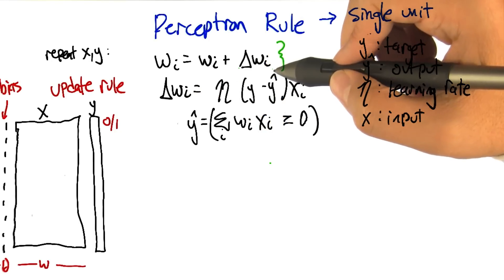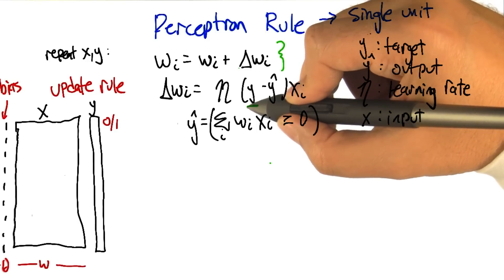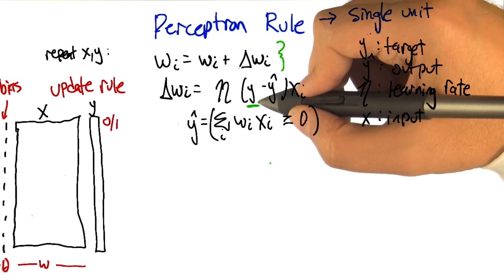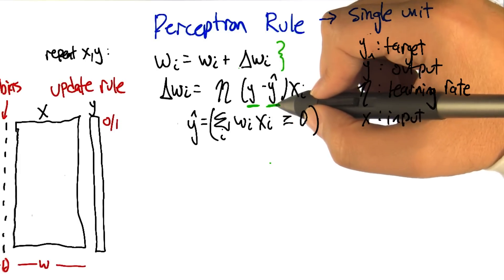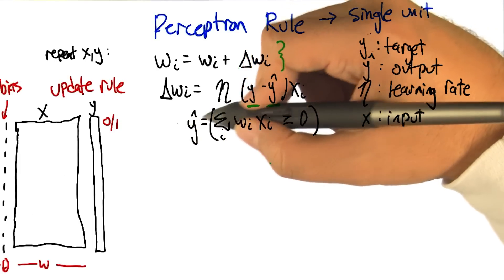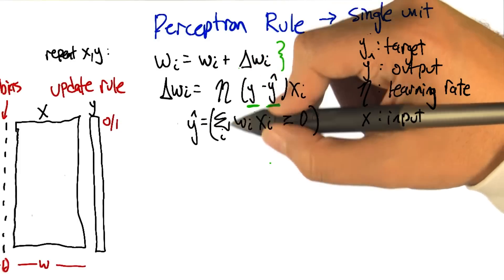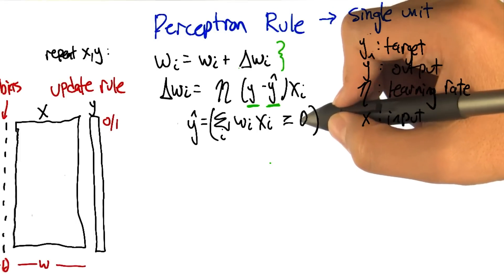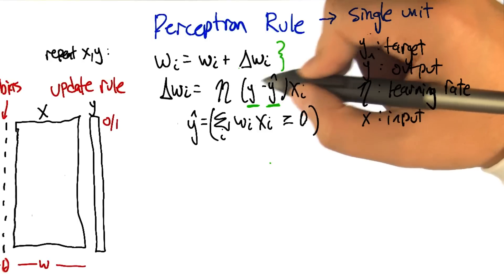The weight change is going to be defined as follows. We're going to take the target, the thing that we want the output to be, and compare it to what the network with the current weights actually spits out. So we compute this y hat, this approximate output y, by again, summing up the inputs according to the weights, comparing it to zero, that gets us a zero, one value. And so we're now comparing that to what the actual value is.